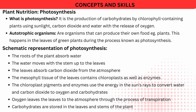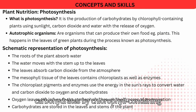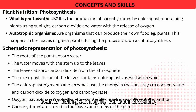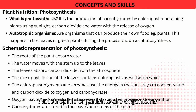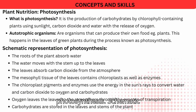Concepts and Skills — Plant Nutrition: Photosynthesis. What is photosynthesis? It is the production of carbohydrates by chlorophyll-containing plants using sunlight, carbon dioxide, and water, with the release of oxygen. Autotrophic organisms are organisms that can produce their own food, e.g. plants. This happens in the leaves of green plants during the process known as photosynthesis.